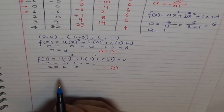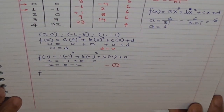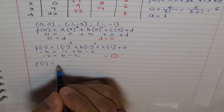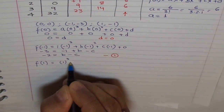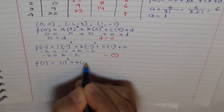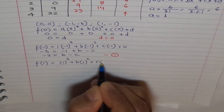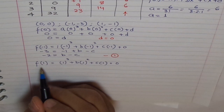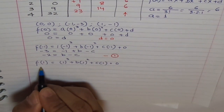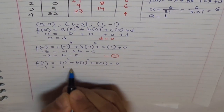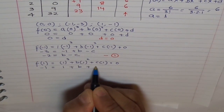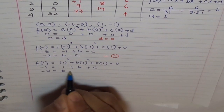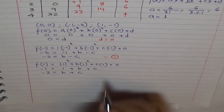Now we will use the third point F(1). We replace all the x's with 1, so we get 1³ plus B times 1² plus C times 1, and D is 0. F(1) is minus 1. So we write minus 1 equals 1 plus B plus C. Taking the 1 to this side, we get minus 2 equals B plus C. Let's call this equation 2.